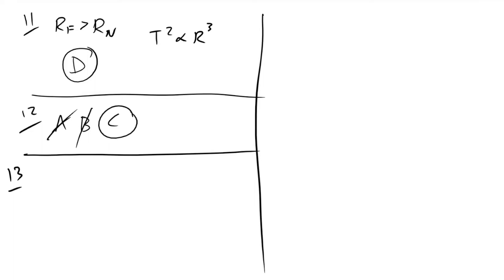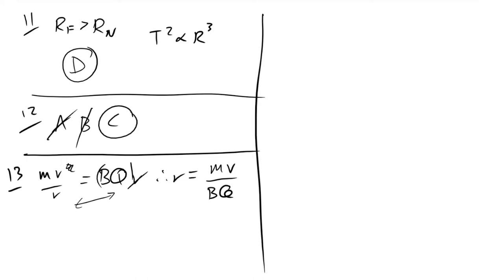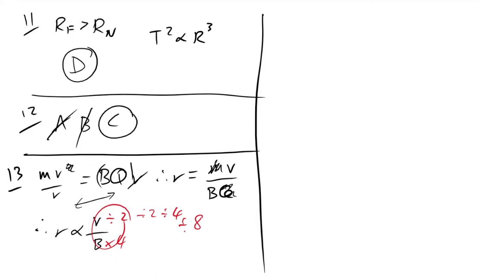Question 13: charged particle in a magnetic field. Using mv²/R = BQv, one v cancels: R = mv/(BQ). Both are electrons so mass and charge are the same. R ∝ v/B. The second electron has half the speed and four times the flux density, so R is divided by 2 and then by 4 — divided by 8 overall. The answer is A.